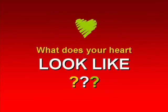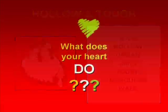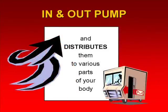What does your heart look like? Your heart is hollow and tough — it is a hollow organ with a tough muscular wall. Your heart is an in and out pump. It receives blood and oxygen from your lungs and distributes them to various parts of your body.